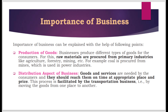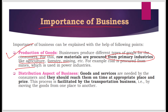Now let's discuss the importance of business. First is the production of goods — business produces different types of goods for consumers. For this, raw materials are procured from primary industries like agriculture, forestry, mining, etc. For example, coal is procured from mines and is used in the power industry.